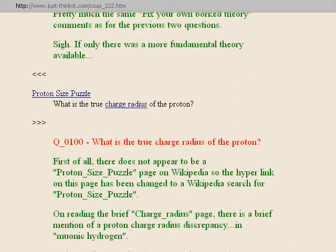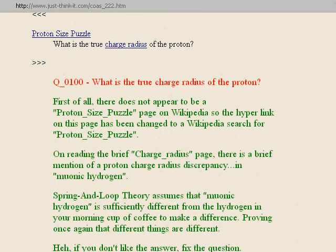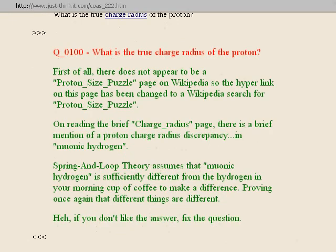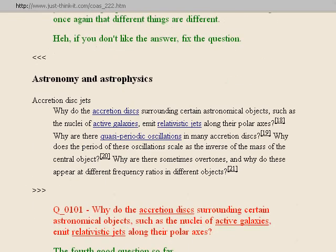Next section: proton size puzzle. Question one hundred: what is the true charge radius of the proton? There does not appear to be a proton size puzzle page on Wikipedia, so the hyperlink has been changed to a Wikipedia search. There is a brief mention of a proton charge radius discrepancy in muonic hydrogen. Spring-in-Loop Theory assumes that muonic hydrogen — a pseudo-hydrogen where you use muons instead of electrons — is sufficiently different from regular hydrogen to make a difference. Proving once again that different things are different.